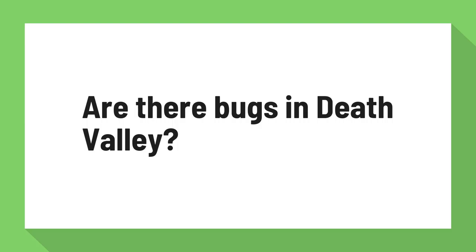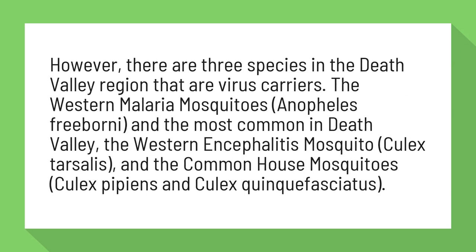Are there bugs in Death Valley? However, there are three species in the Death Valley region that are virus carriers: the Western Malaria mosquito, Anopheles freeborni, and the most common in Death Valley, the Western Encephalitis mosquito, Culex tarsalis, and the common house mosquitoes, Culex pipiens and Culex quinquefasciatus.